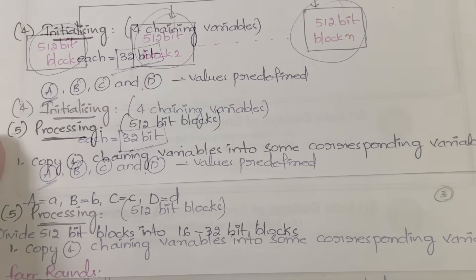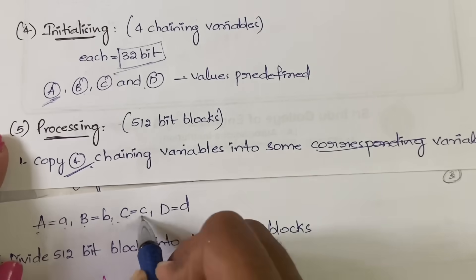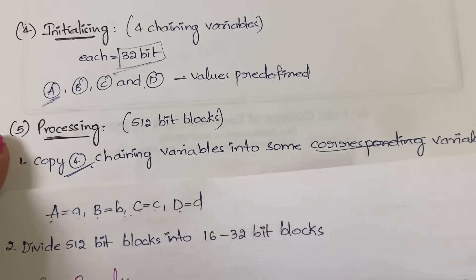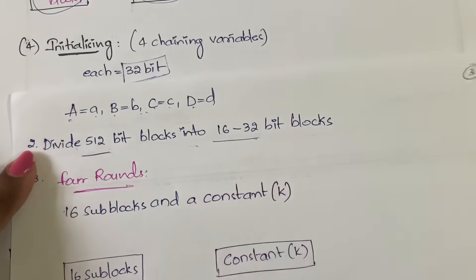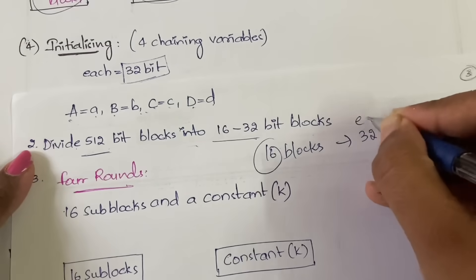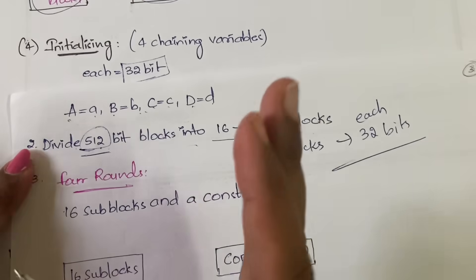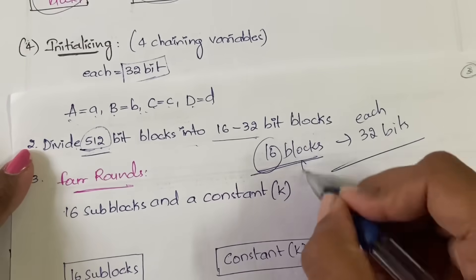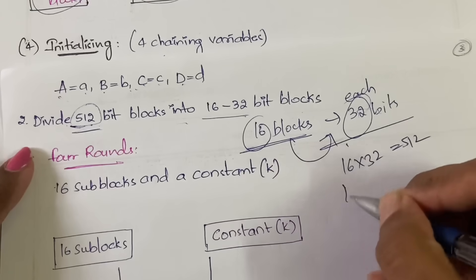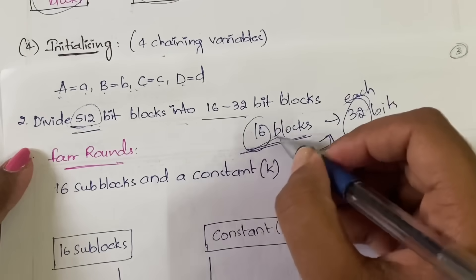After copying the chaining variables, you divide each 512-bit block into 16 sub-blocks, each of size 32 bits. You can verify this: 16 times 32 equals 512. So each 512-bit block is broken into 16 sub-blocks of 32 bits each.